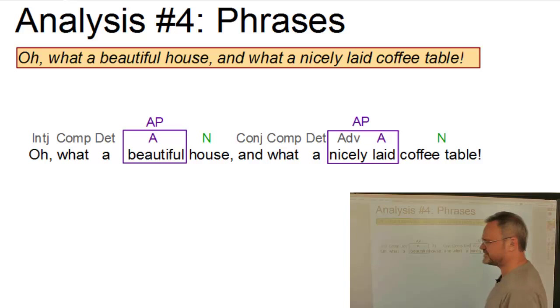First, we have two adjectival phrases at the lowest level. In the first case, we have a simple adjectival phrase, beautiful with no pre-modifier nor post-modifier. The adjectival phrase nicely laid consists of a pre-modifier nicely, which is an adverb, and the head laid.